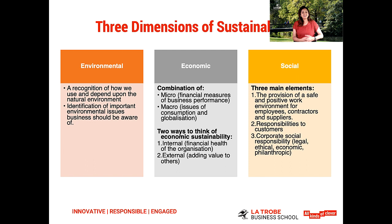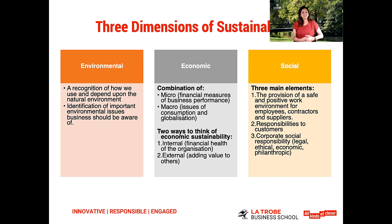Let's take a more detailed look into each of these dimensions. With the environmental dimension, it's a recognition of how we use and depend upon the natural environment, and also an identification of important environmental issues that businesses should be aware of. When we think about the economic dimension, it's really looking at the micro — at a business level — but also at the macro level, covering issues of consumption and globalization. There are also two important ways to think about economic sustainability: internal, the financial health of the organization, and external, where you add value to others.